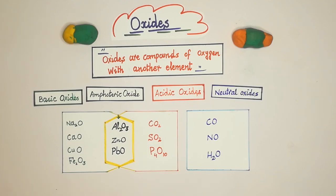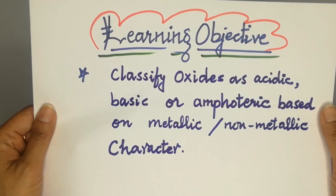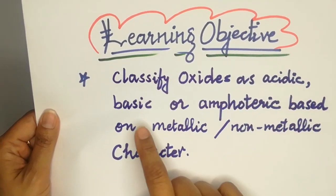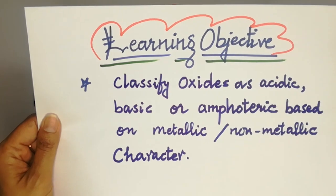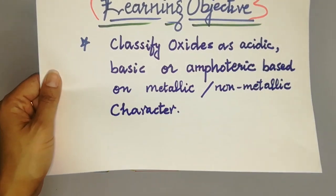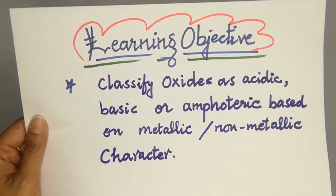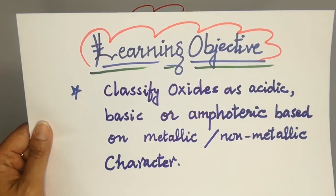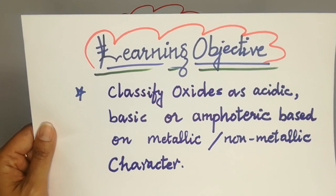This is the end of the lesson. I hope you have learned well how to classify oxides as acidic, basic, amphoteric, or neutral based on metallic or non-metallic character. If you found this helpful, don't forget to subscribe to my channel and hit the bell icon.